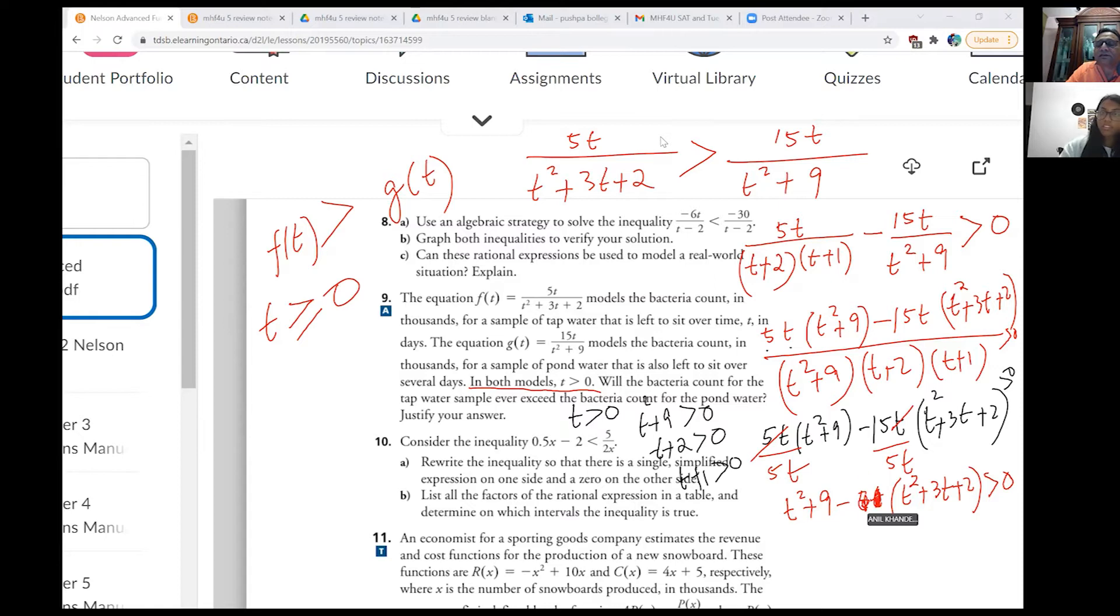So that's a quadratic equation to solve. So let me expand this. So we have next statement, which is t squared plus 9. Open this bracket. Minus 3t squared minus 9t minus 6 should be greater than 0. Clear? So t squared minus 3t is minus 2t squared minus 9t and 9 minus 6 is 3. It should be greater than 0. Is that okay? Yeah. So that is the equation which we need to solve.